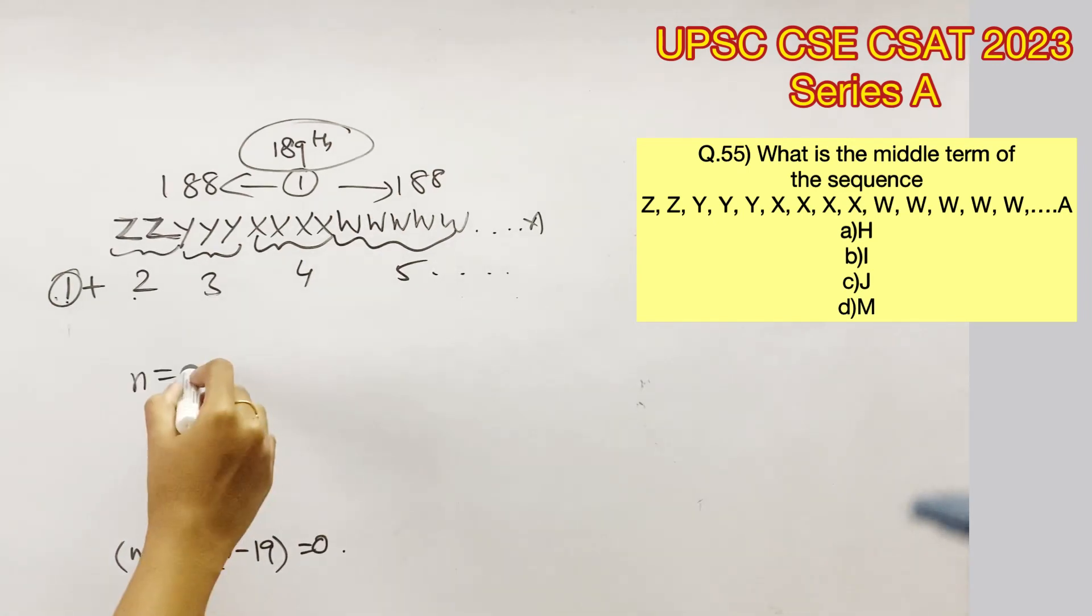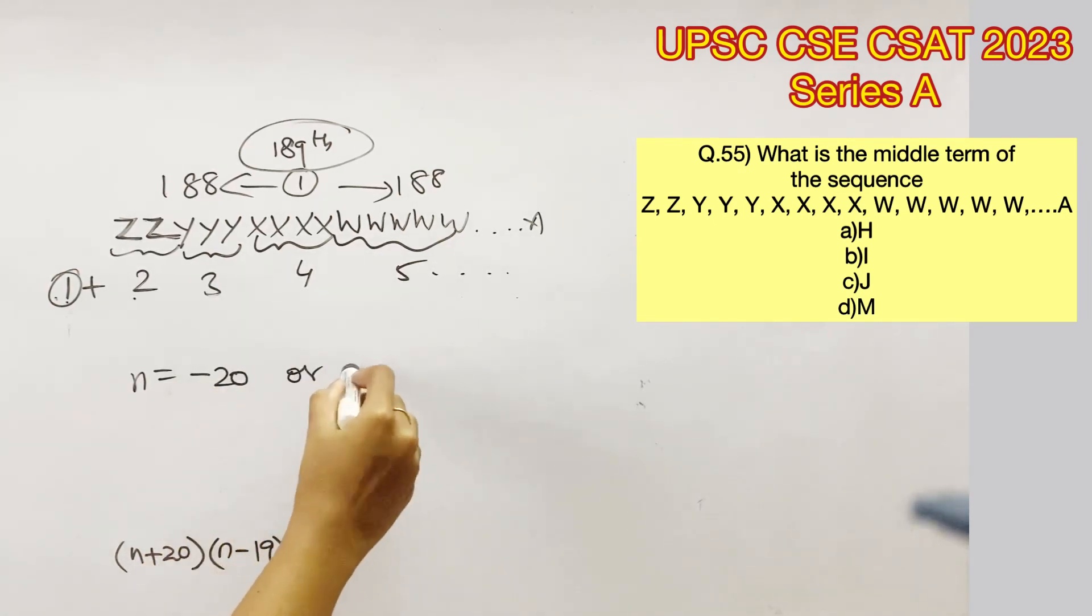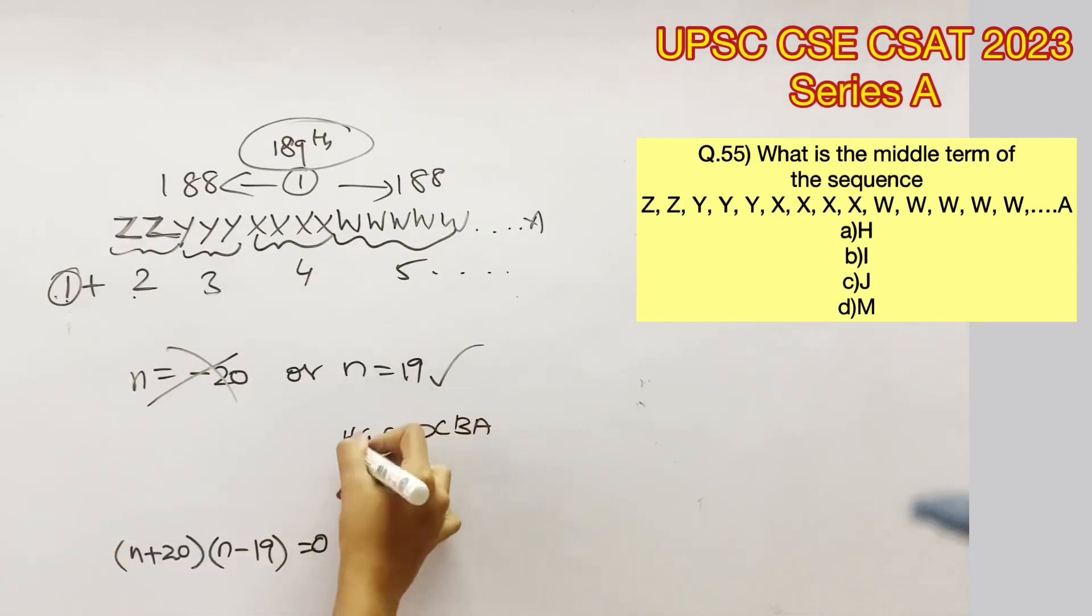The values for N are minus 20 and plus 19. Minus 20 is not possible. Therefore, the 19th letter in the reverse order of the alphabet sequence would be our answer.